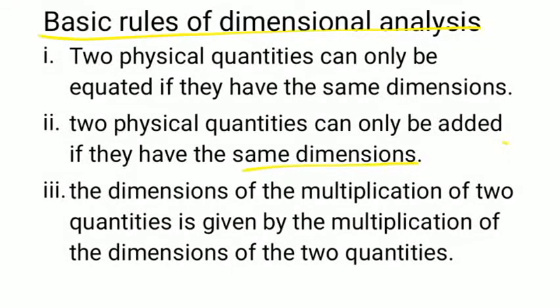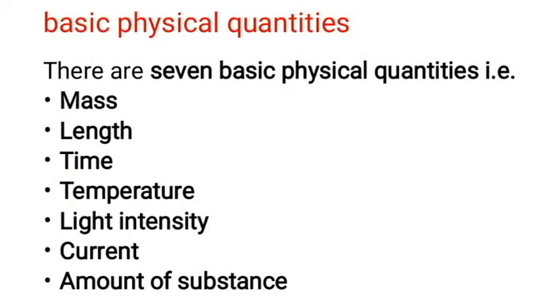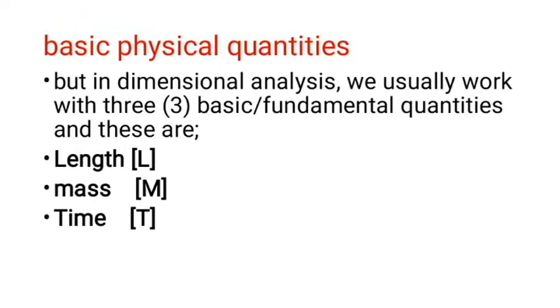Now the basic physical quantities. There are seven basic physical quantities and that is mass, length, time, temperature, light intensity, current, and amount of substance. But in dimensional analysis we only consider three basic or fundamental quantities: length, mass, and time. So these are the ones that we work with in dimensional analysis.